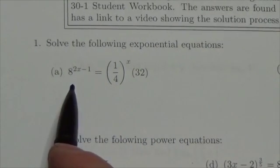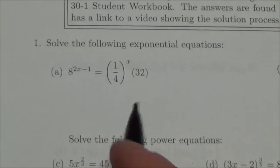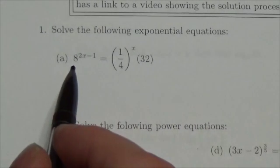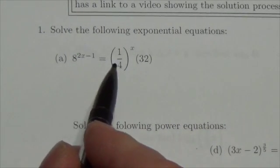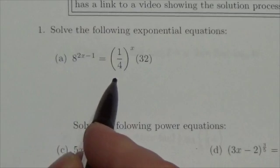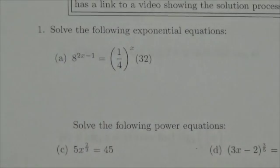Hi everyone. In this question, we're being asked to solve this exponential equation. Notice that the left-hand side here is 8 to the 2x minus 1, and we've got equals 1 over 4 to the x, and then 32.